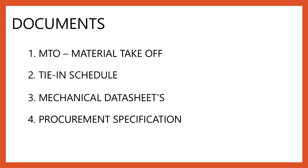Now let's go to the documents submitted in piping projects as part of a deliverable. The first document is MTO — Material Takeoff — which has a list of materials that has to be procured for construction. The second document is the tie-in schedule, which is a sheet that indicates a list of tie-ins, from where the tie-in is to be taken, with the schedule and the type of joint connections.